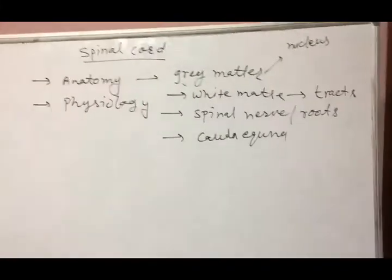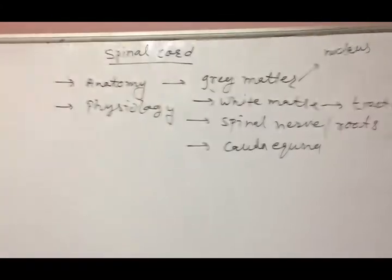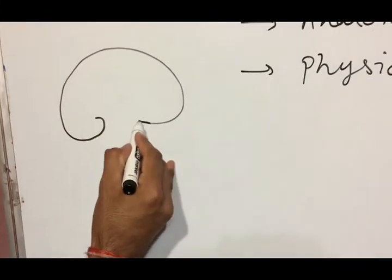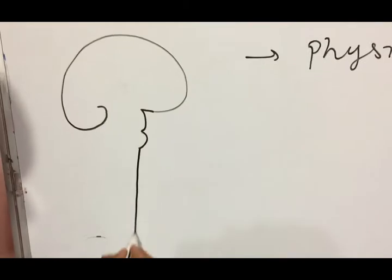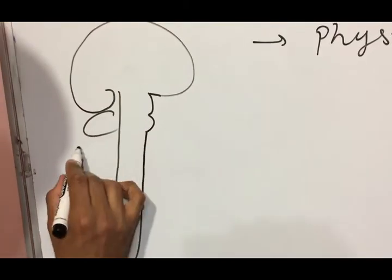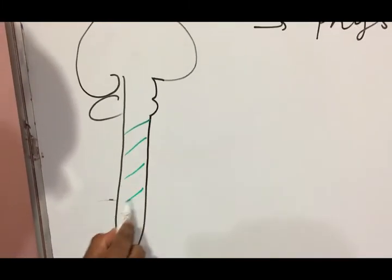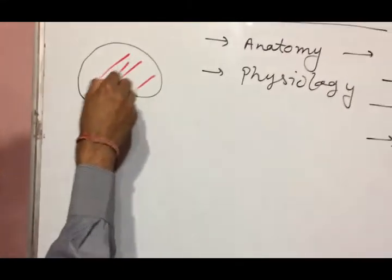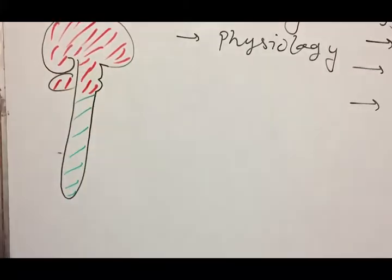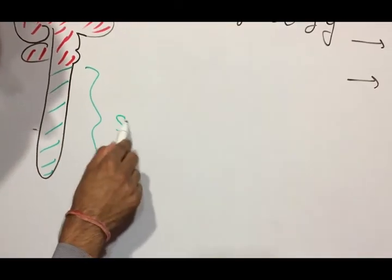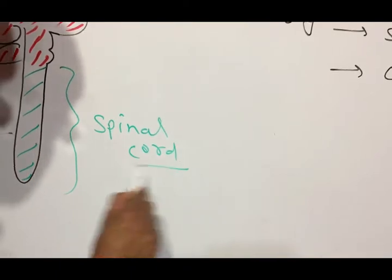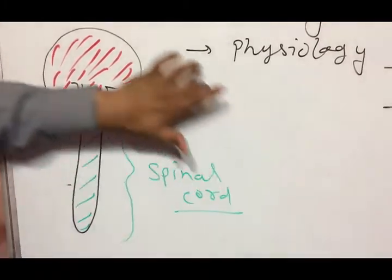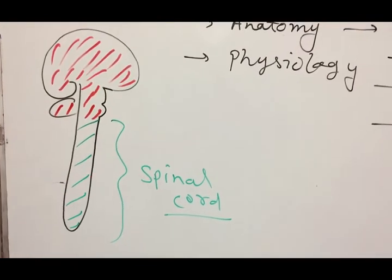The spinal cord is the long cylindrical lower part of the CNS. In the CNS, the last topic we studied included the medulla oblongata and the cerebellum. In this diagram, the green part is the spinal cord and the red part is the brain. So today we will study the spinal cord — the long cylindrical lower part of the CNS.